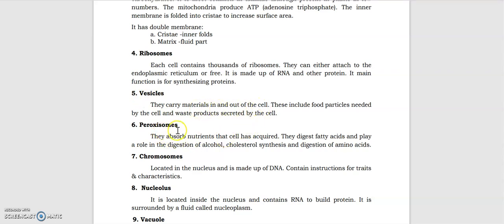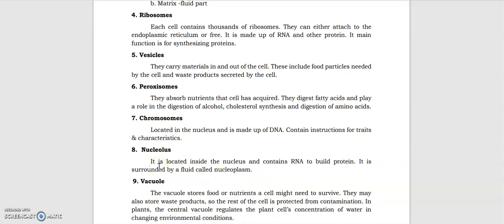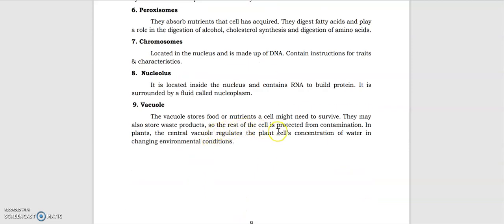And the peroxisomes: they absorb nutrients that the cell has acquired. They digest fatty acids and play a role in the digestion of alcohol and cholesterol. Then we have the chromosomes located in the nucleus and made up of DNA. Then the nucleolus located inside the nucleus contains RNA to build proteins. Then the vacuoles store food or nutrients a cell might need to survive.